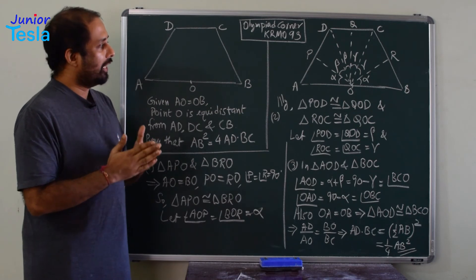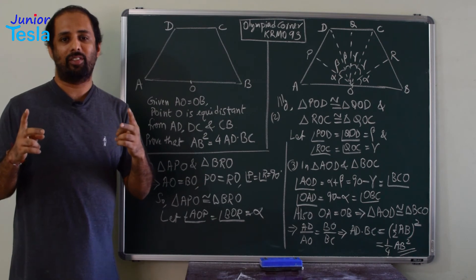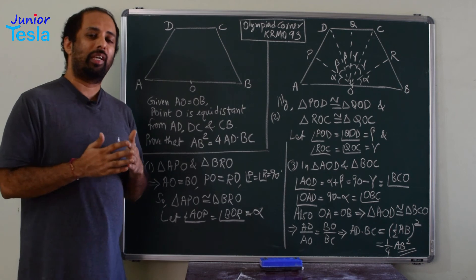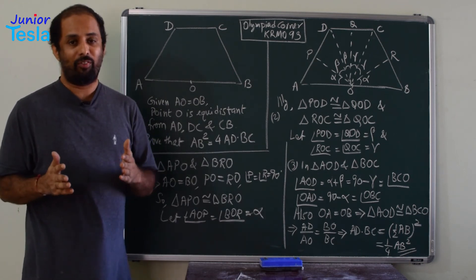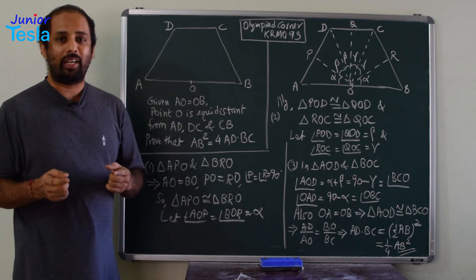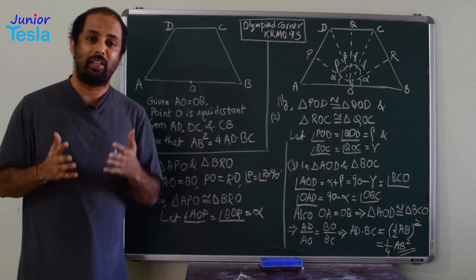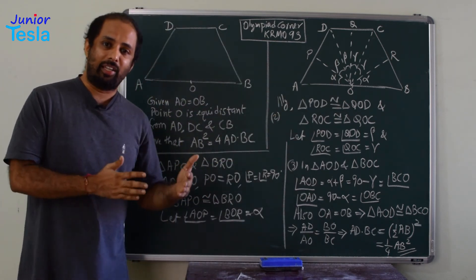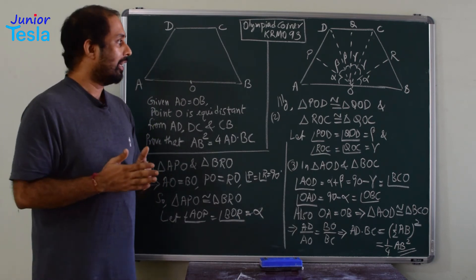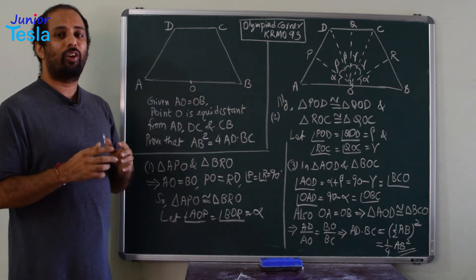Now let us find another set of angles. Angle OAD = 90° − alpha because one angle is alpha and one angle is 90°, so the third angle is 90° − alpha. That is also equal to angle OBC, because again one angle is alpha and one is 90°, so the third angle is 90° − alpha. So angle OAD and angle OBC are also equal. We got two pairs of equal angles, so the third pair must also be equal — the triangles are similar. But we also have AO = BO, so triangle AOD and triangle BCO are congruent.